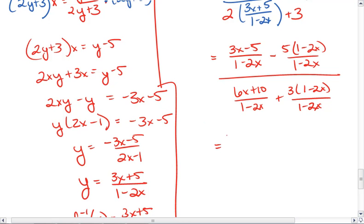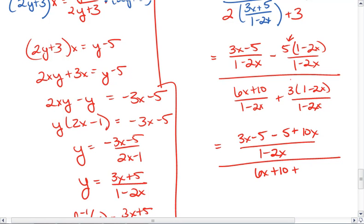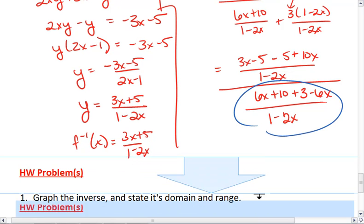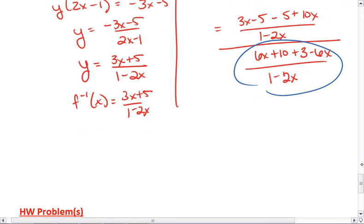Alright, because we're dividing by a fraction, this gives us 3x minus 5 minus, I'm going to distribute this 5 up here, 5 plus 10x all over 1 minus 2x over 6x plus 10 plus, let's distribute this 3 as well, 3 minus 6x all over 1 minus 2x. Alright, because we're dividing by a fraction that's the same as multiplying by its reciprocal. We get 3x.